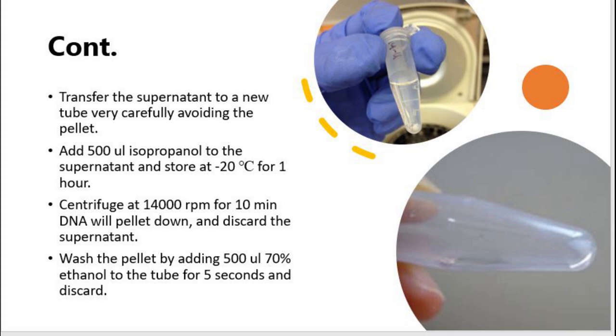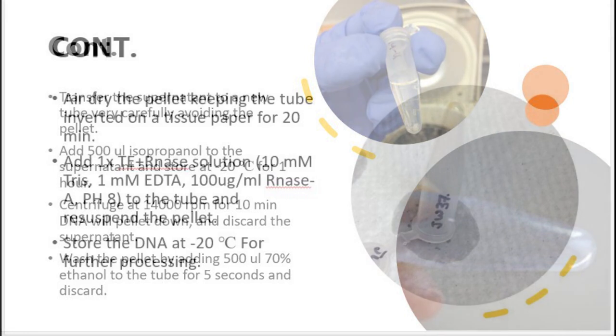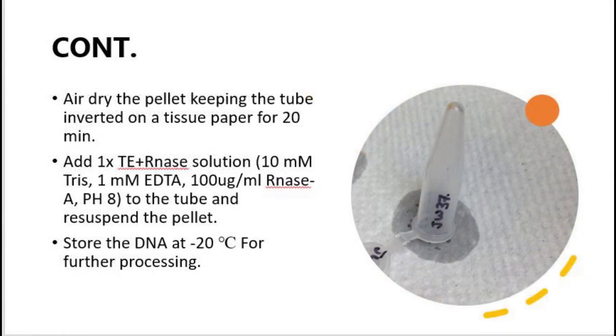Shake it for one to two times very smoothly without disturbing the pellet, and then discard the ethanol. Then air dry the pellet by inverting the tube and keeping it on tissue paper for 20 to 30 minutes.